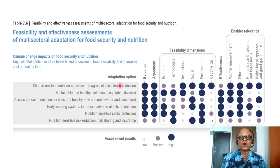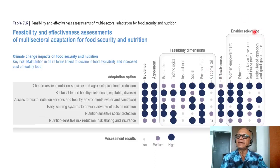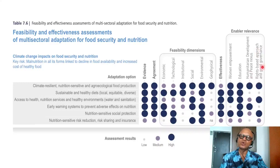Adaptation options are assessed with evidence rated low, medium, or high, and agreement among assessments. The feasibility dimensions are economic, technological, institutional, social, environmental, and geophysical. Effectiveness is also measured from low to high, and enabler relevance looks at women's empowerment, education, humanitarian development, peace nexus, rights-based approach, and good governance.